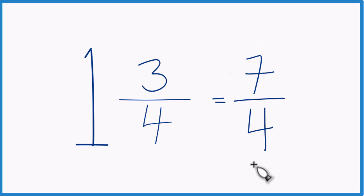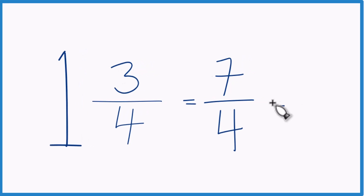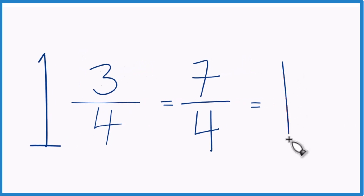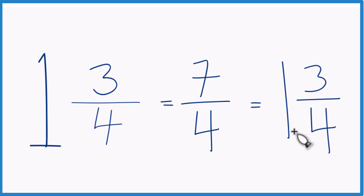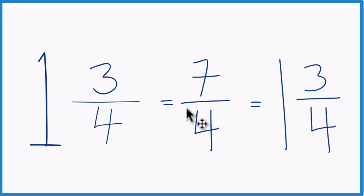And you can check your work because 4 goes into 7 one time with 3 left over. Bring the numerator across, and there you have it — 1 and 3 fourths. And that's the same thing we started with. This is Dr. B, and thanks for watching.